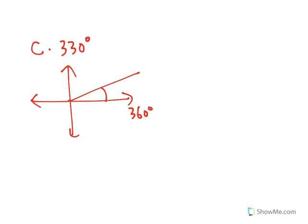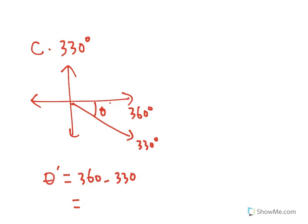So for C, it says 330 degrees. So, for this one, 330 degrees is actually very close to 360 degrees. So we're going to take the reference angle over here. Excuse me, the angle is over here, 330. And this is going to be the reference angle. So reference angle is going to equal to 360 minus 330, which is exactly 30 degrees. And that is part C.